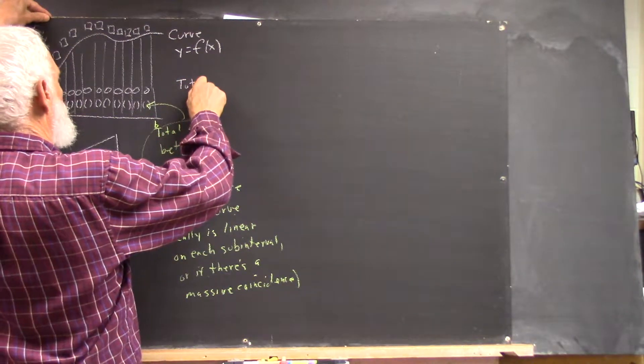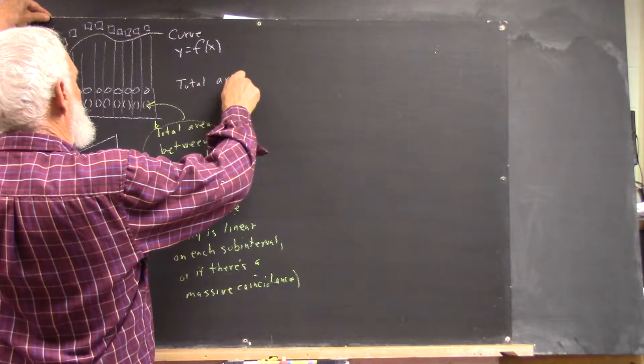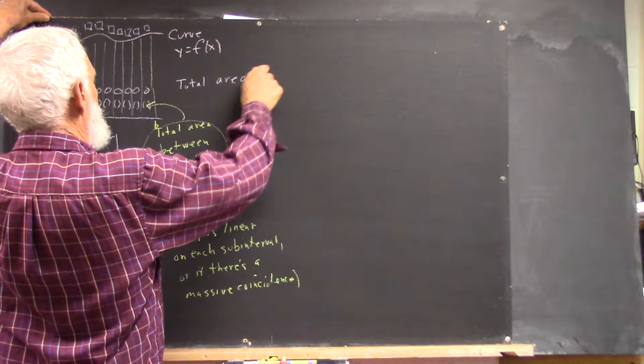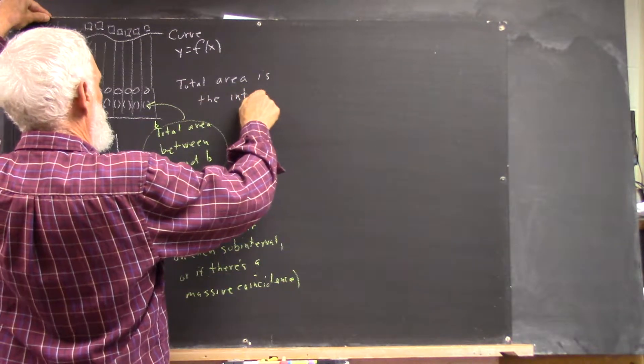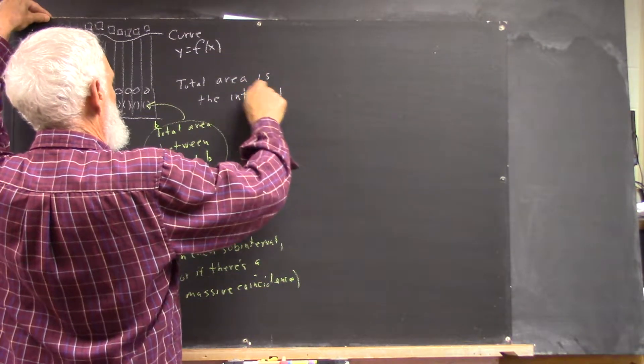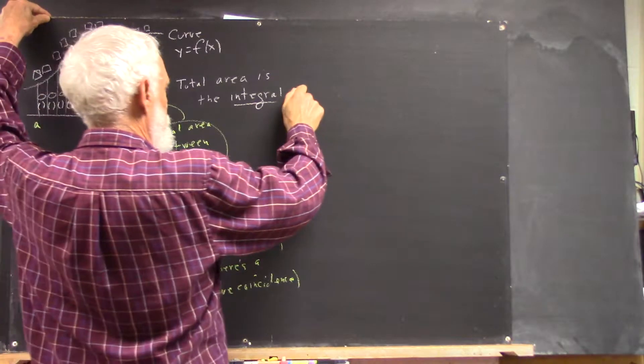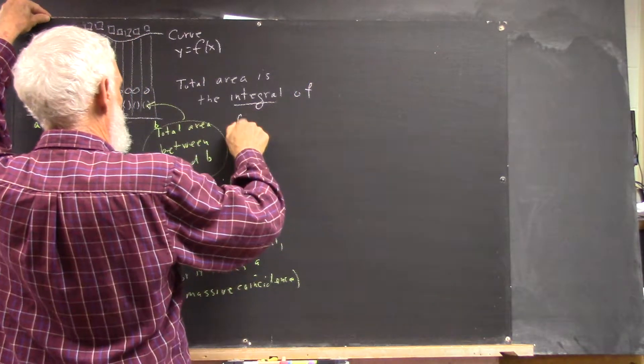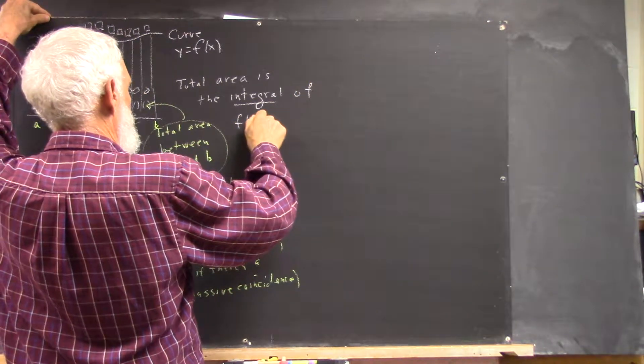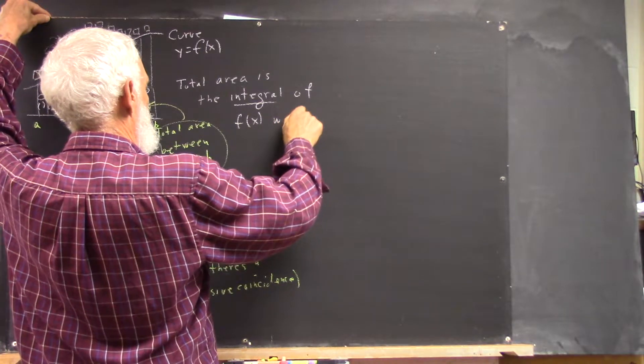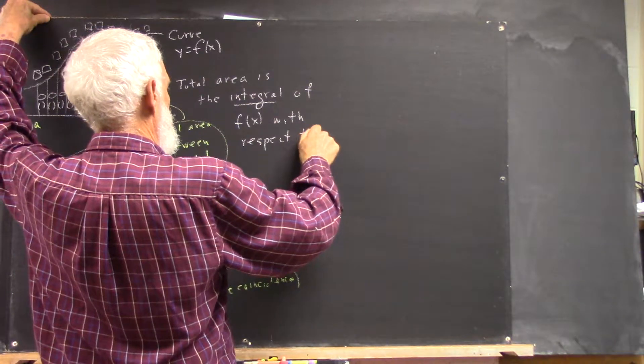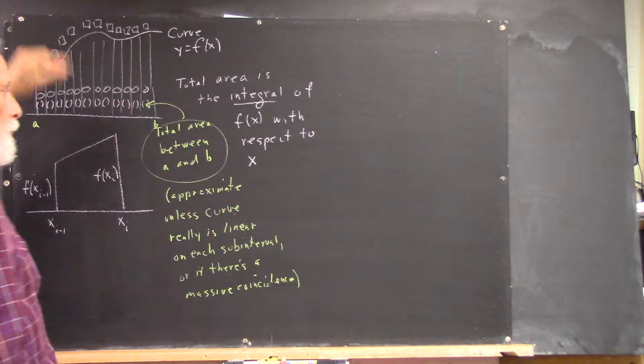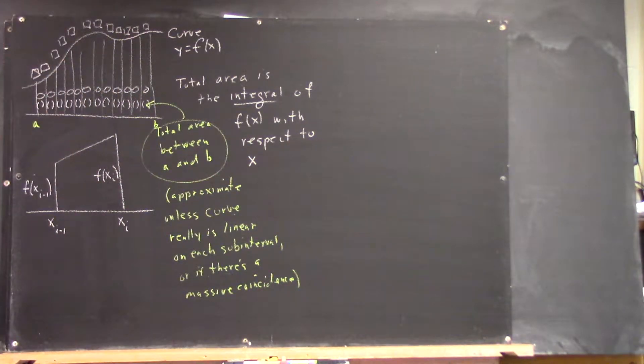Then, just a little notation. Total area is what you call the integral of f of x with respect to x.